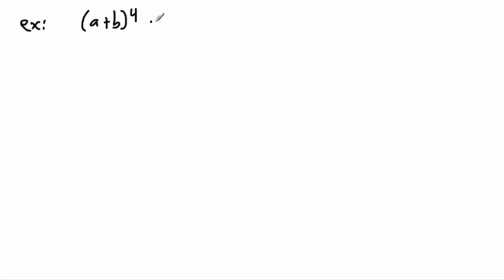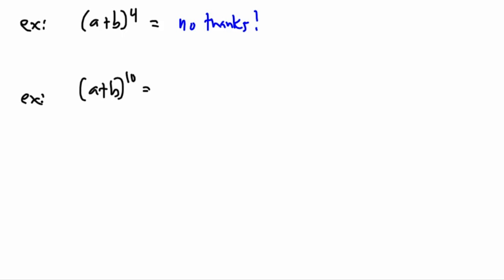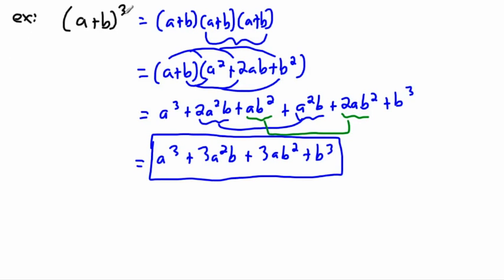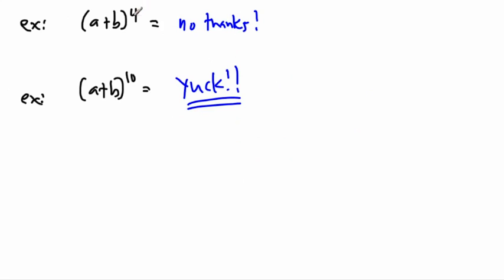Now what if we have something even worse, like (a + b) to the power of 4? You might be sweating thinking you don't want to watch this — honestly I don't feel like doing it either. What if we have (a + b) to the power of 10? That's just awful. Doing it by hand is perfectly possible for small powers, but as the powers get larger and larger it gets really horrible — a big giant mess of a's and b's everywhere.